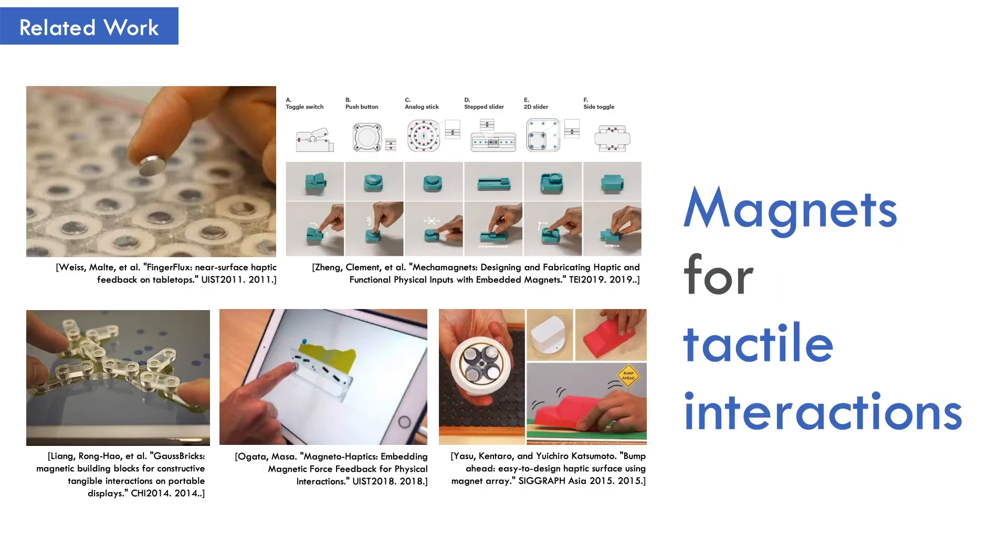In particular, magnetic materials are very useful for prototyping tactile interactions. If a tiny magnet is attached to a finger or nail, it can be used for finger position detection and also tactile presentation. Furthermore, if magnets are embedded in building blocks or 3D printed objects, they can be used as a tangible interface with tactile feedback.